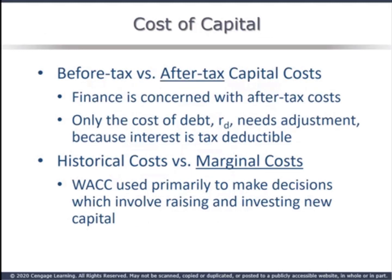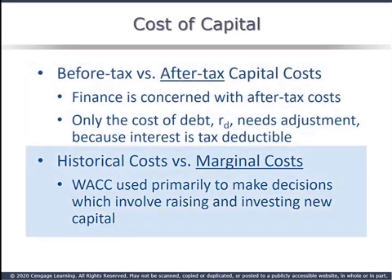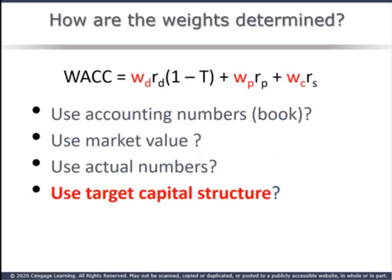Before we go further, two major points. Finance is concerned with after-tax cost. Only the cost of debt is adjusted for tax effects since interest on debt is tax deductible. The weighted average cost of capital is typically used to evaluate investment opportunities to be undertaken in the future. We aren't usually interested in what the cost of capital was last year. We need to know the cost of the next dollar of capital — the marginal cost of money to the firm. The weights used in the WACC formula represent the percentage of the firm funded by each source of capital.